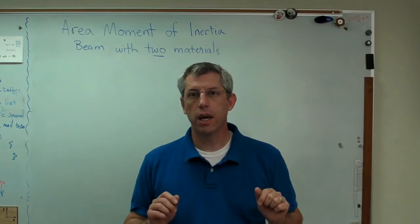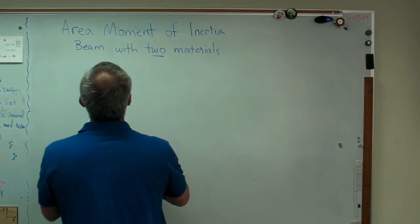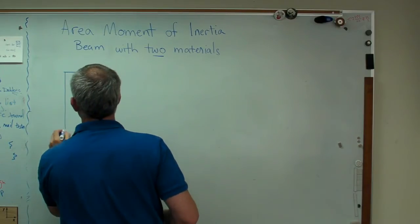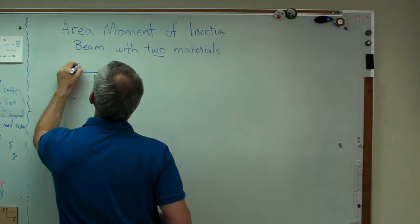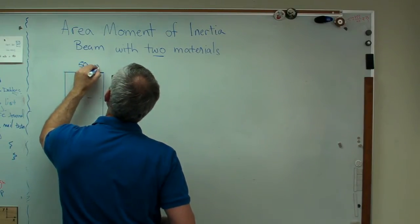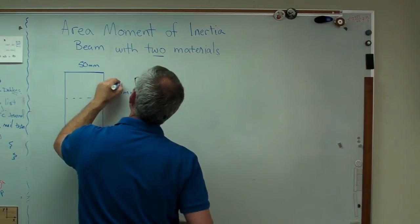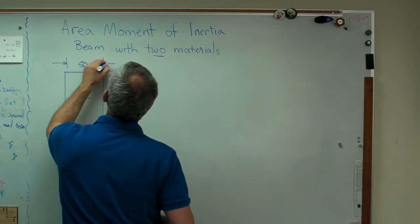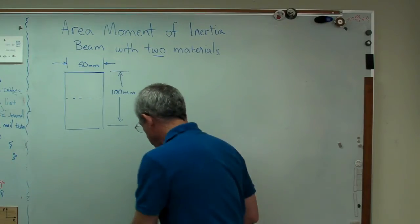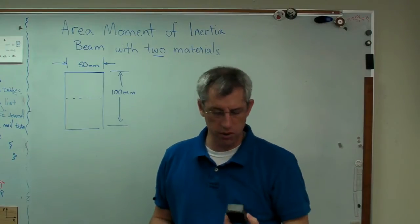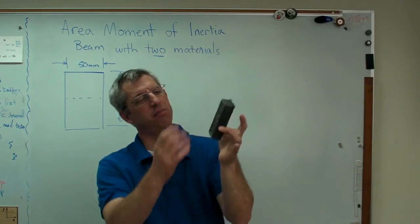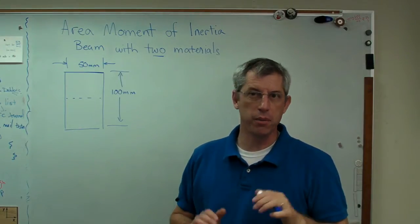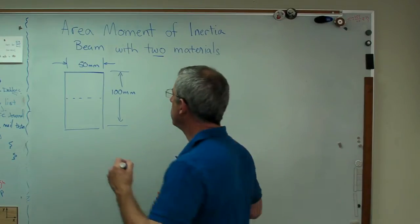I'm going to show you how to do this and we're going to use a really simple example. Here's a rectangular beam and let's pick some really easy dimensions here. That's 50 millimeters and that's 100 millimeters. If you insist on thinking about this in English units, it's basically two by four. So here we go. I've got a beam, simple rectangular beam, no problem, except let's make this one out of two different materials.